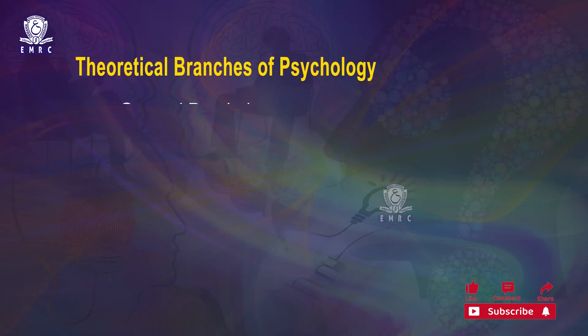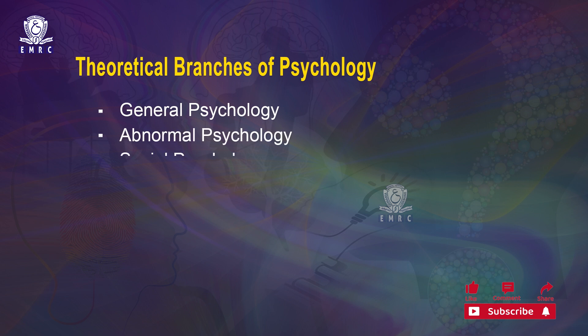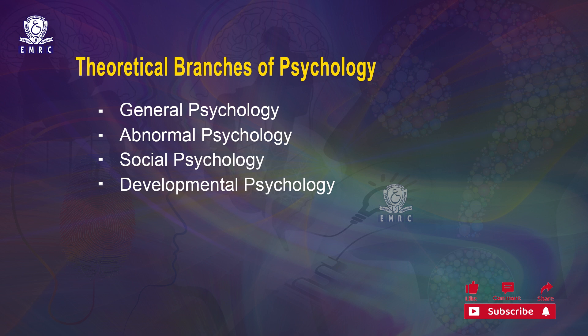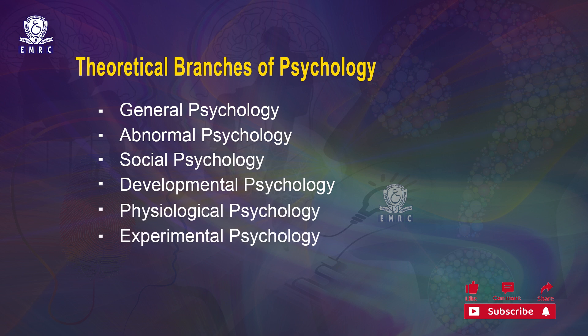These areas include cognitive, conative, and affective areas. Some of the theoretical branches of psychology include general psychology, abnormal psychology, social psychology, developmental psychology, physiological psychology, experimental psychology, comparative psychology, and certain others.